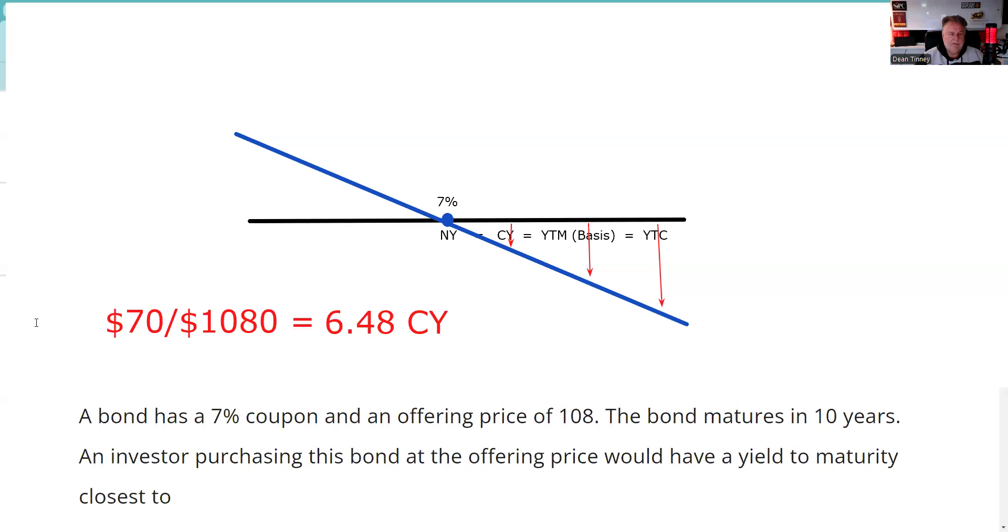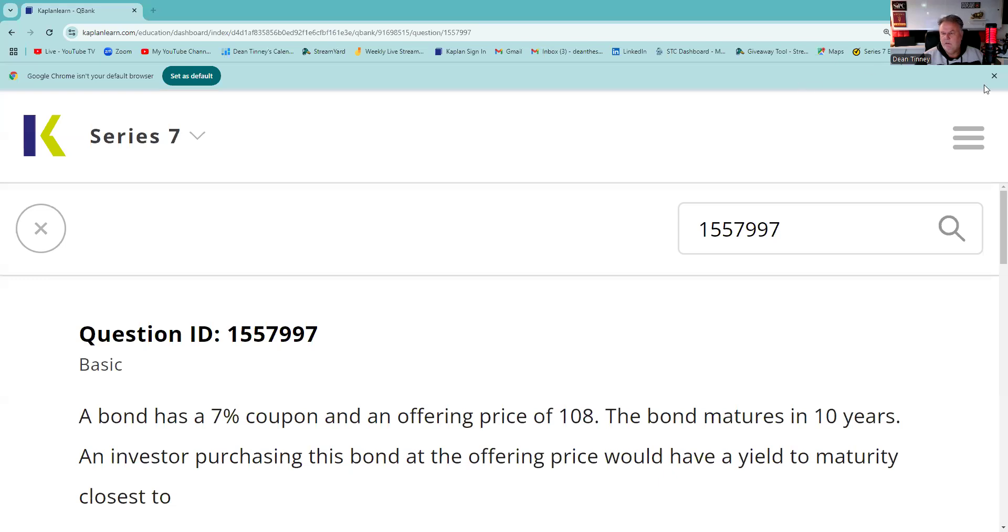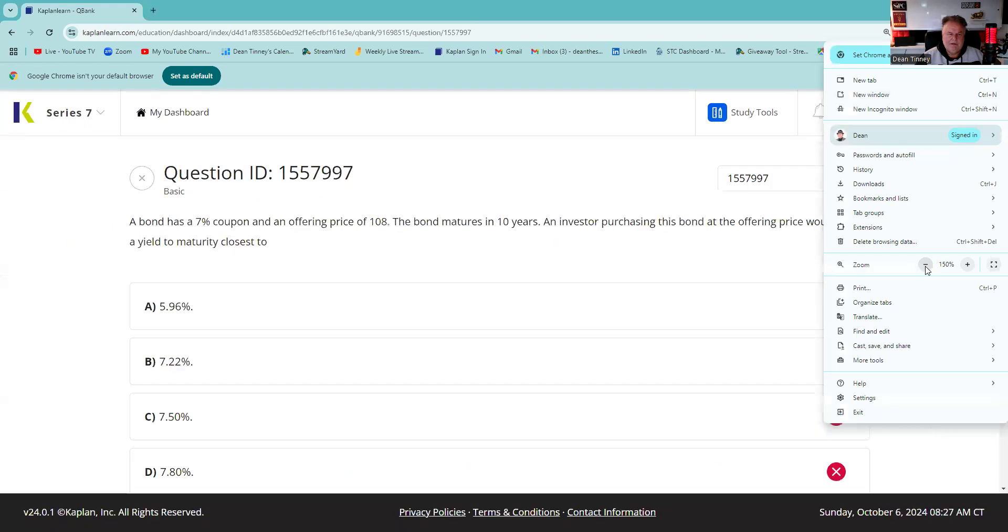This is a Kaplan question. If you don't have a Kaplan QBank, I highly recommend it as a paid supplement. With my 15% discount code at checkout, you can get a Kaplan QBank for $55.80, which I think is a great investment.